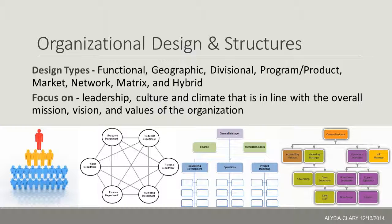There are a number of different organizational design types, including functional, geographic, divisional, program or product, market, network, and matrix. Other types may also emerge based on who you're talking to, but they'll generally fall into one of these or a hybrid model that integrates aspects of more than one type.